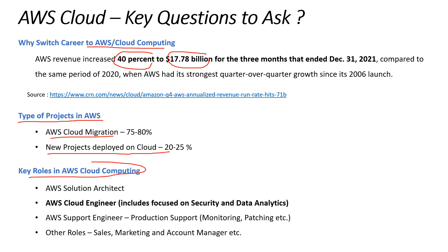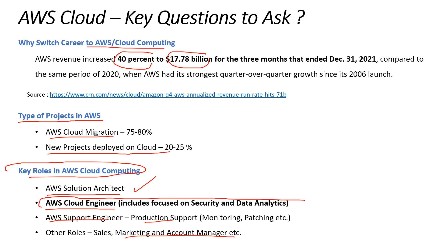Now let's understand the key roles in AWS cloud computing. First, you have the AWS Solution Architect who does the design using AWS services for any application. Then you have the AWS Cloud Engineer who actually implements that design. Third, you have the AWS Support Engineer who does production support, monitoring, patching, and fixing issues. And then you have other roles such as sales, marketing, and conversion. This video is focused on the AWS Cloud Engineer and the skills required.